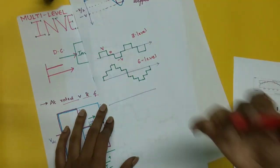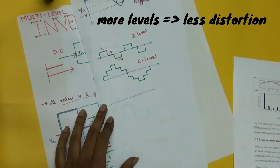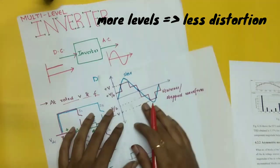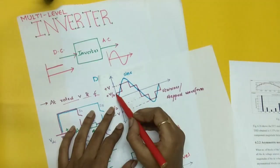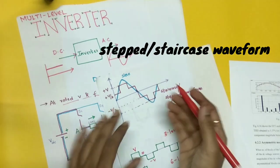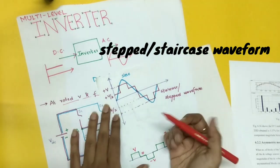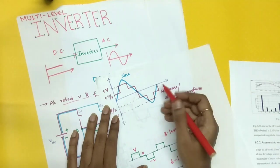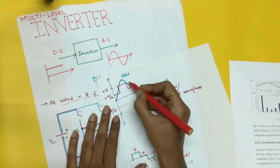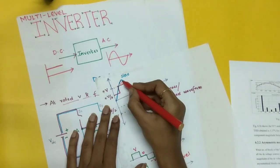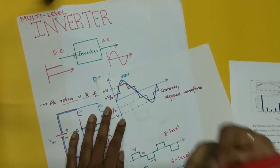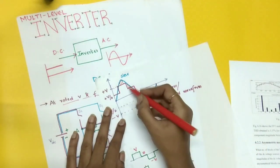As we go for higher and higher levels, the distortion will be less. Consider this stepped waveform — also called a staircase waveform — because of its appearance. The sinusoidal waveform is the desired waveform, and you can see the deviation between them. As we go for higher levels, this deviation will be less.